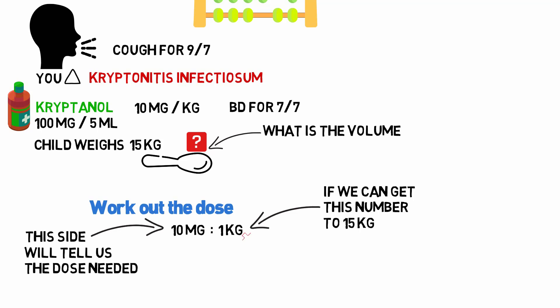then this side of the equation will tell us the dose needed. So 1 kilogram times 15 equals 15 kilograms, and whatever you do on the right-hand side of the equation, you have to do to the left. So 10 milligrams times 15 equals 150 milligrams. So that's the dose. For a 15 kilogram child, you need to give 150 milligrams of cryptonol.